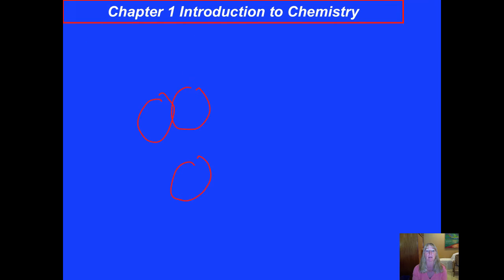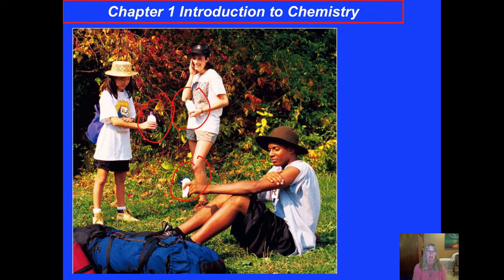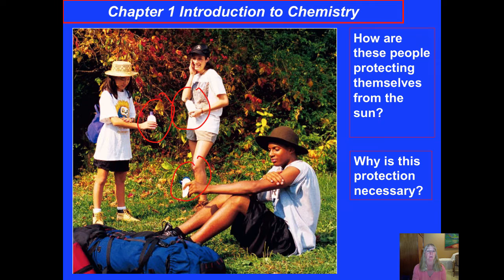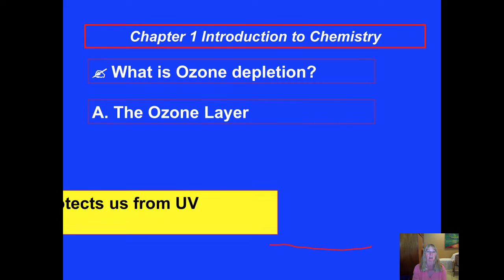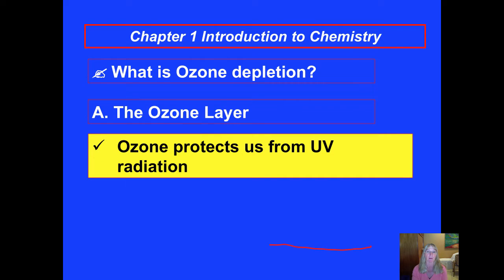There is a layer in the atmosphere called the ozone layer. And it protects us from what these kids are protecting themselves from, ultraviolet radiation. The reason why their protection is necessary is because the ozone layer up in the atmosphere normally would protect us from ultraviolet radiation. This box in yellow with the black font will match section Roman numeral 1A on page 1 of your PowerPoint notes. So ozone protects us from ultraviolet radiation.